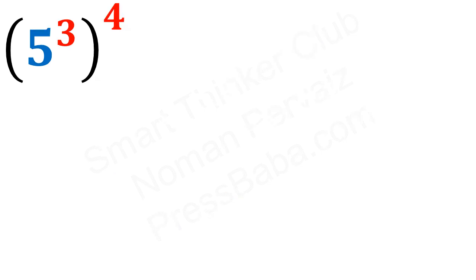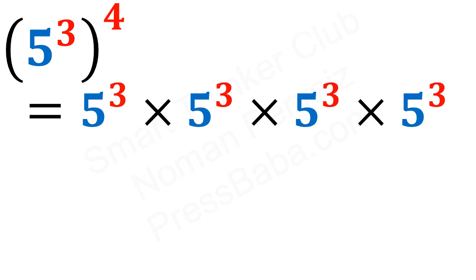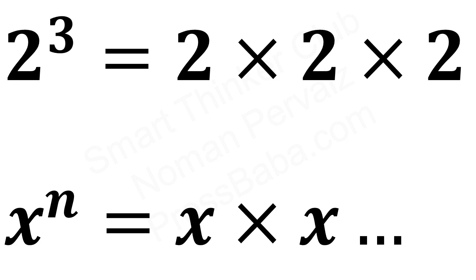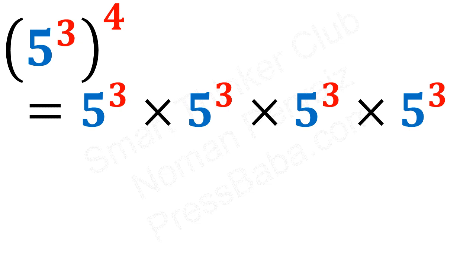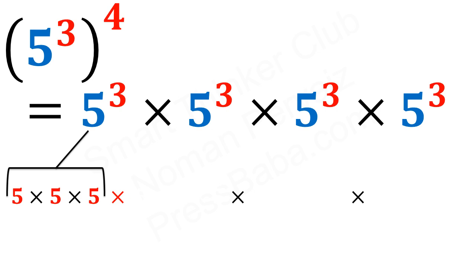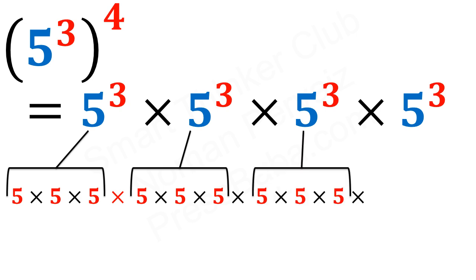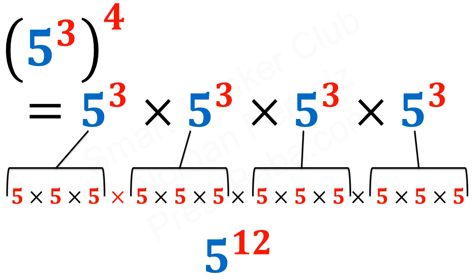We can verify this using the exponent rule. 5 raised to the power 3 whole power 4 can be written as 5 raised to the power 3 multiplied four times. Each 5 raised to the power 3 expands to 5 written three times, and doing this four times gives 5 multiplied a total of 12 times, which is 5 raised to the power 12.